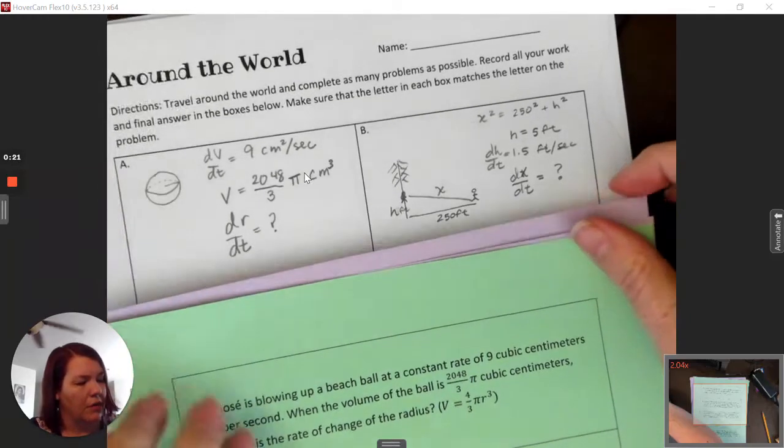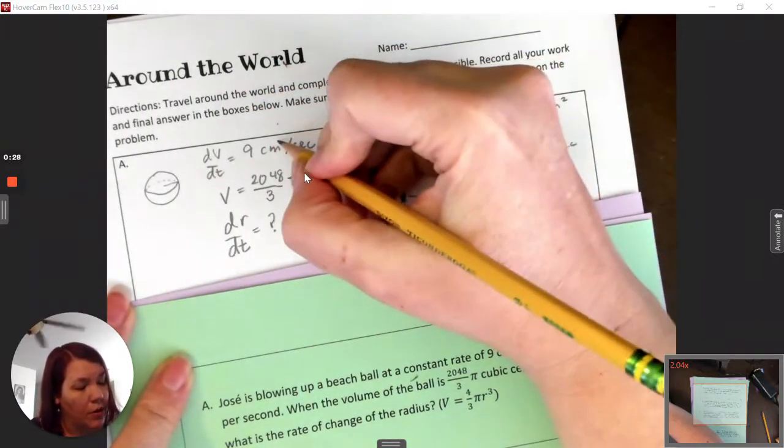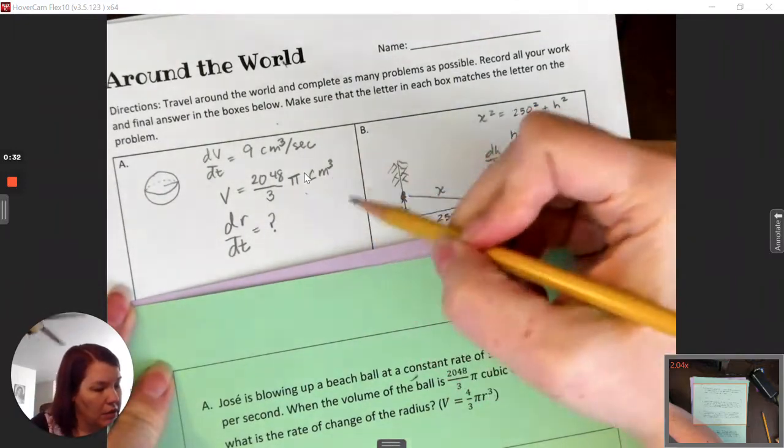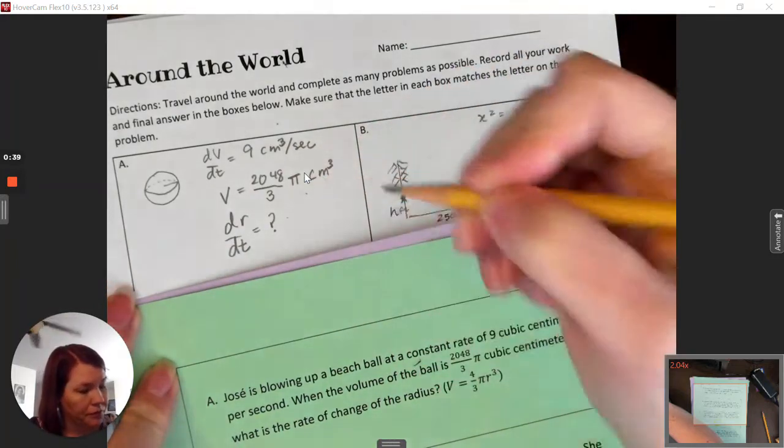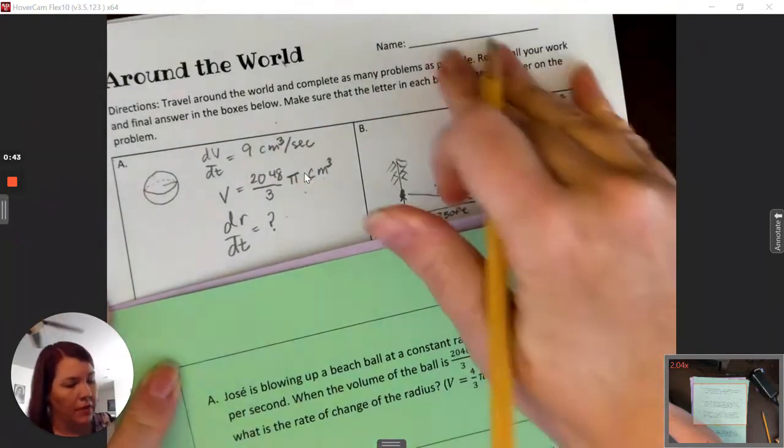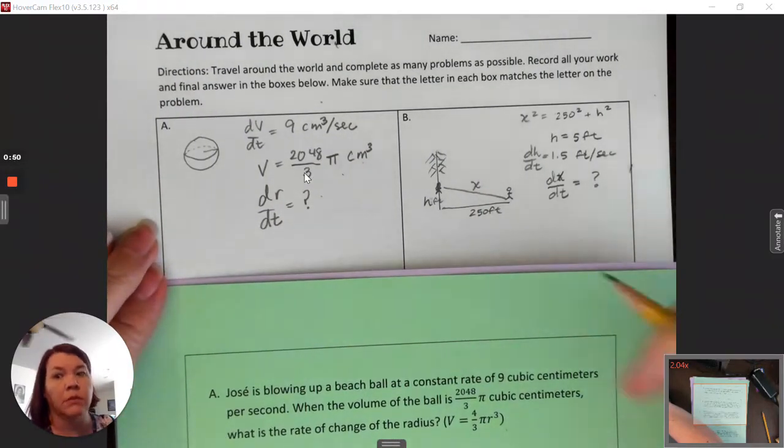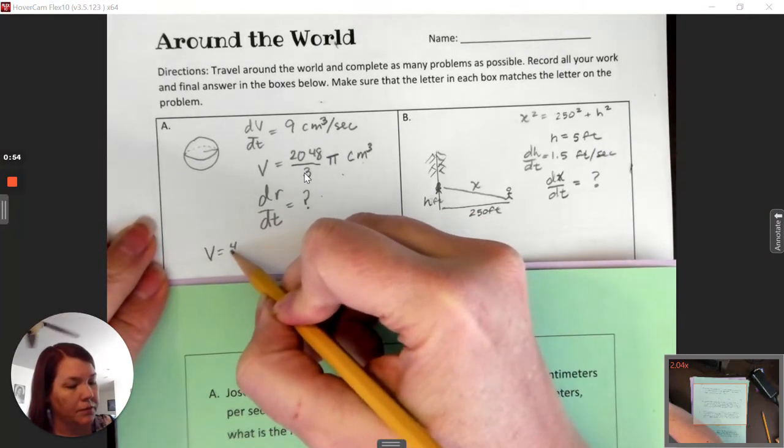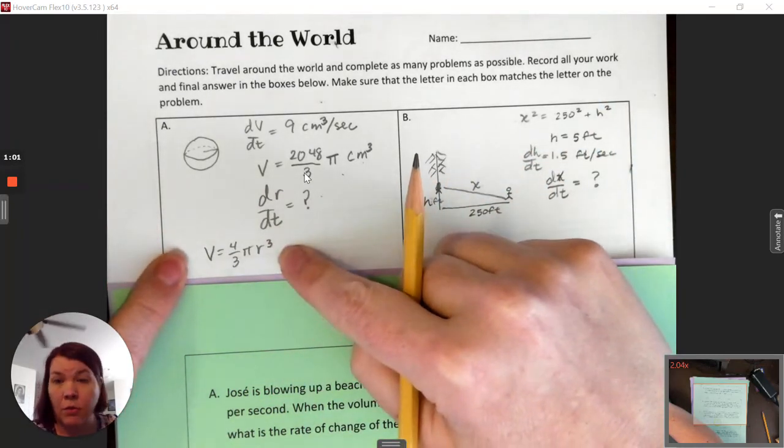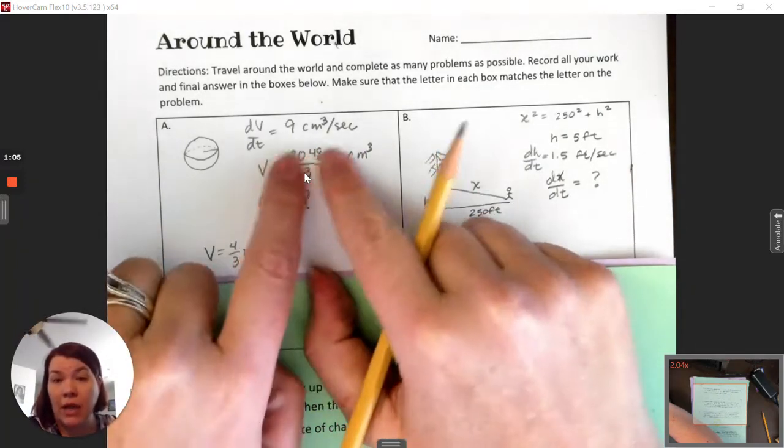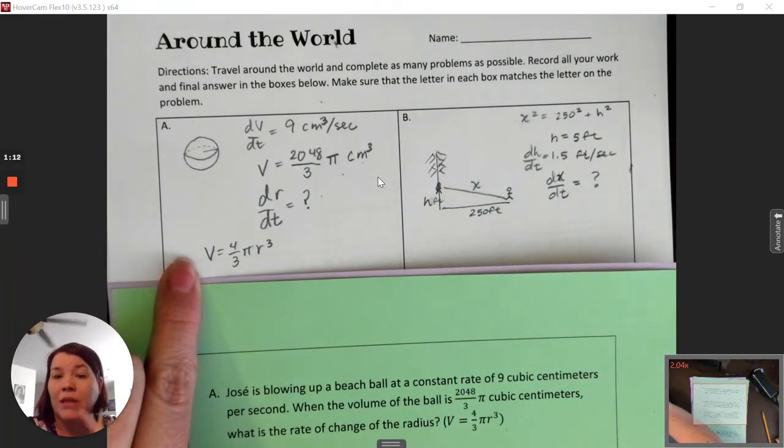So A, Jose is blowing up a beach ball at a constant rate of nine cubic centimeters per second. I wrote square, not cubic. When the volume is this, find the rate of change of the radius. So we are looking for dr/dt. This is the volume. We know dv/dt. They gave us an equation. And so I'm not going to do this one. It's way too easy, comparatively speaking. So it's not easy, but compared to all the rest of problems, this is one of the easiest. The volume formula. So what you're going to do is take the derivative of this formula with respect to t and then solve for dr/dt. But don't plug any of this stuff in until after you take the derivative. Derivatives first, plug in second. Really, really, really important. Derivative first, plug in second.